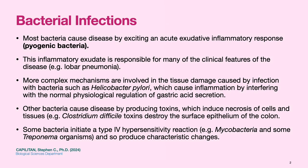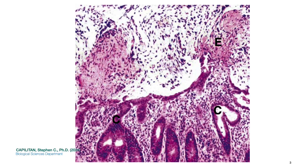Let's start with bacterial infections. Most bacteria cause disease by exciting an acute exudative inflammatory response in the case of pyogenic bacteria. This inflammatory exudate is responsible for many of the clinical features of disease such as lobar pneumonia. More complex mechanisms are involved in tissue damage caused by bacteria such as Helicobacter pylori, which cause inflammation by interfering with normal physiological regulation of gastric acid secretion. Other bacteria cause disease by producing toxins which induce necrosis of cells and tissues, such as Clostridium difficile toxins which destroy the surface epithelium of the colon. Some bacteria initiate type 4 sensitivity reactions such as mycobacteria and some Treponema organisms, producing characteristic changes.